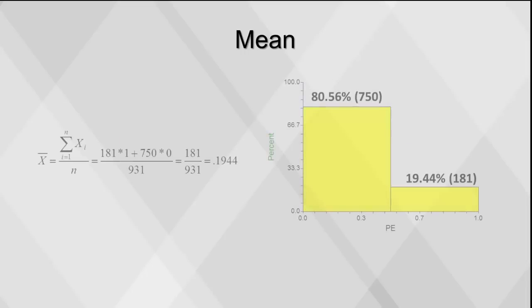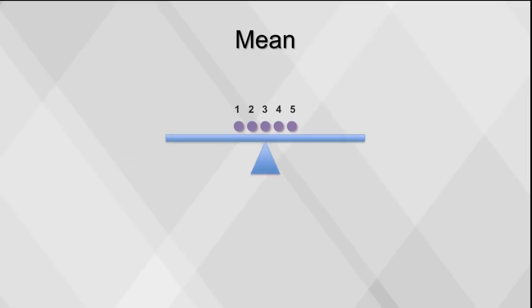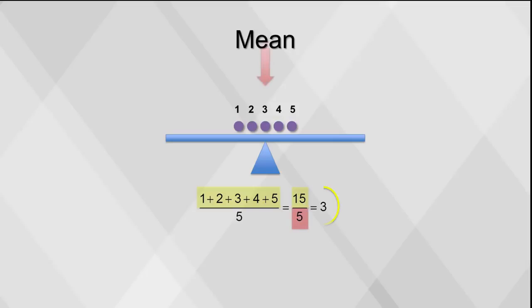We can construct means of binary variables — the mean of a binary variable represents the percentage of ones. The mean is affected by extreme values, which is why we often look at means in conjunction with medians. For example, the mean of 1, 2, 3, 4, and 5 is 3. However, if the values are 0, 1, 2, 3, 4, and 10, the mean shifts to 4.